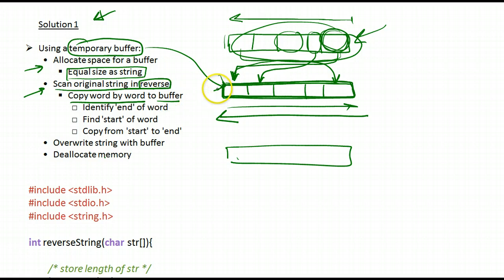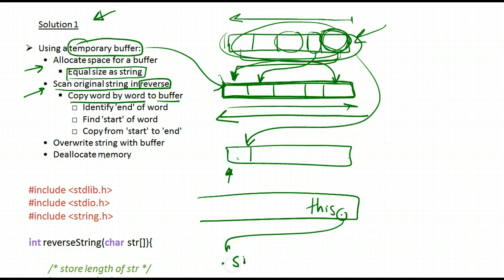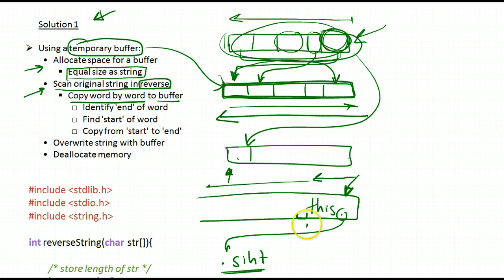Every word encountered in the original string is copied to the new buffer from the beginning to the end. This reverses the order of the words. There's a slight challenge though: you can't copy character by character scanning backwards, because then you'd copy the word in reverse character order. Instead, you have to identify the end of the word, then move backwards until you encounter a space — that tells you you've reached the beginning of the word.